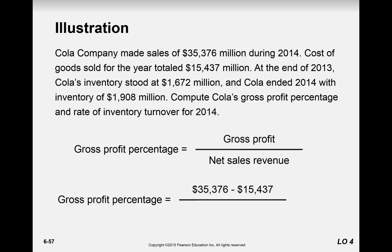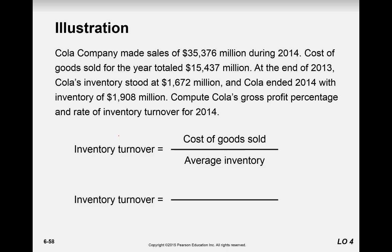For the gross profit percentage, we take sales minus cost of goods sold of $15,437 million. Our net sales revenue is $35,376 million, giving us a gross profit of 56.4%. I would say 30% to 50% is about average, so anything above that is wonderful — it means $0.56 out of every dollar is available to pay other expenses and is not part of producing the item.